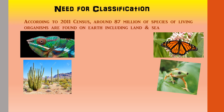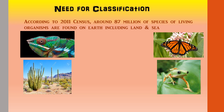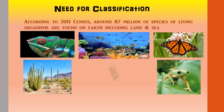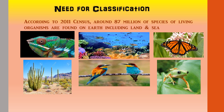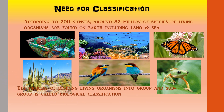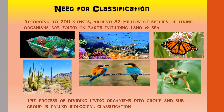To study such a vast number, it was essential to divide them into groups and subgroups, considering the similarities and differences. This process of dividing living organisms into groups and subgroups is called biological classification.